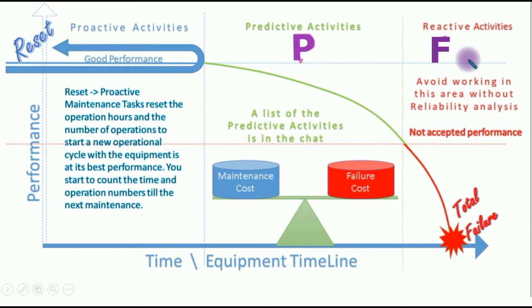And when you reach this range, that's a failure that you cannot retrieve — you need to take some action. So that's the area of the reactive activities. Based on the reliability-centered maintenance, or RCM, without failure you can work in this area, but only for some equipment where the analysis says there is no feasible action that can be done before this area. Otherwise, don't take the risk to work in this area.